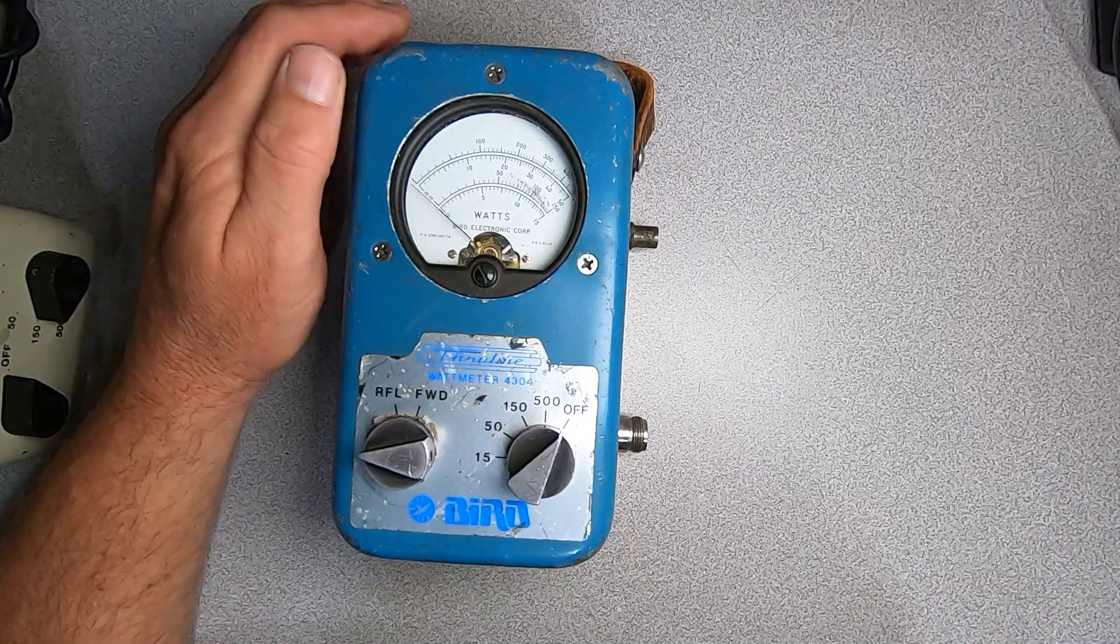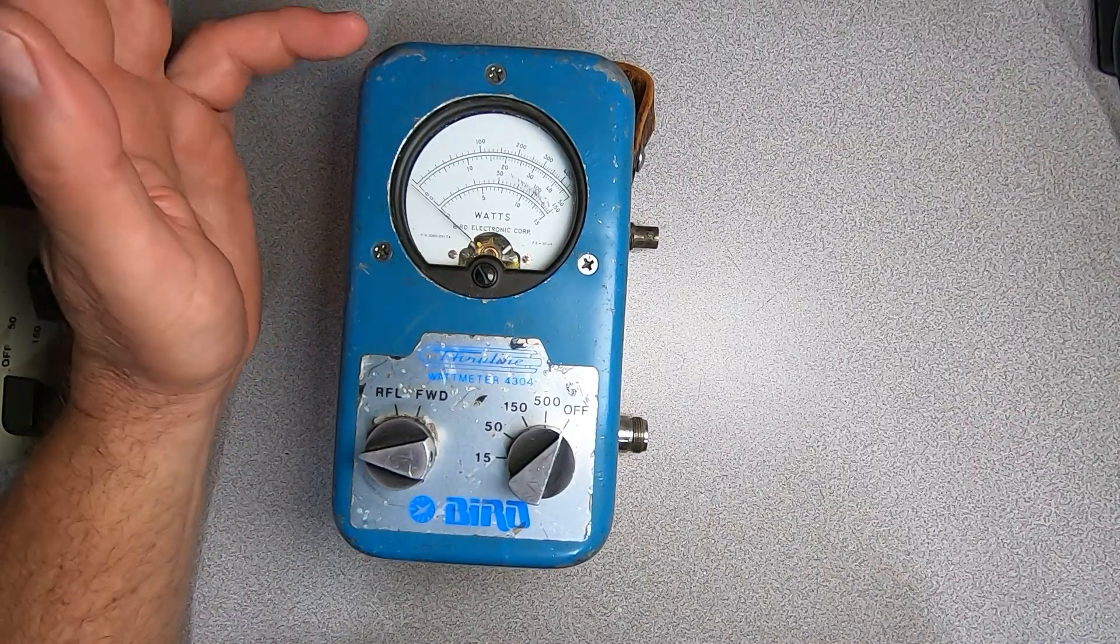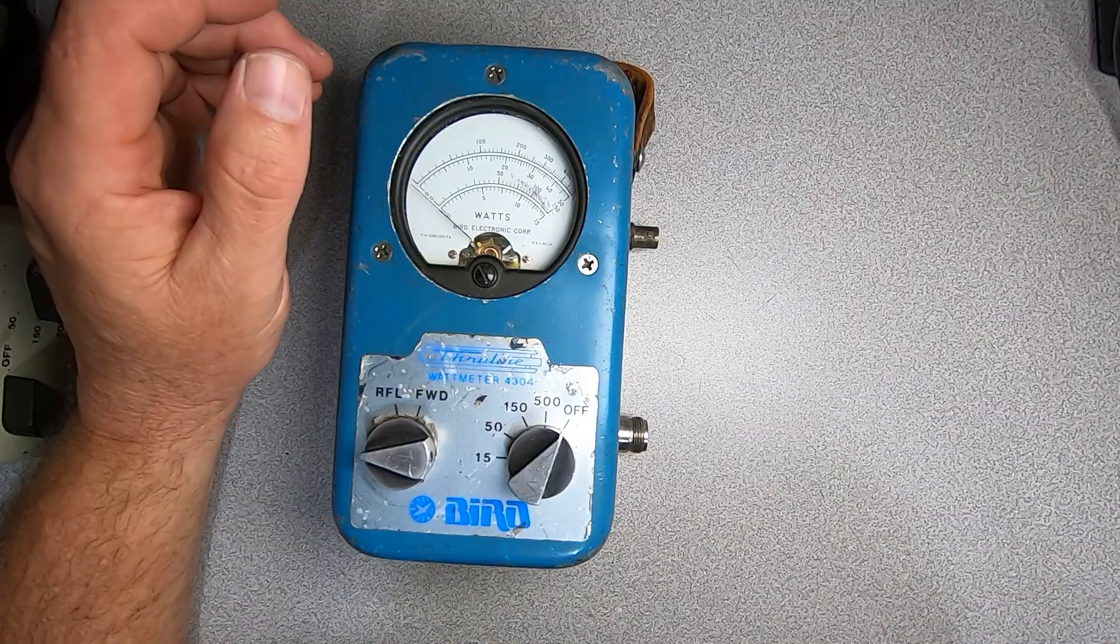Hello, this is Brad from Survival Comms. It has been said that after Armageddon, cockroaches and Bird 43 watt meters will survive.